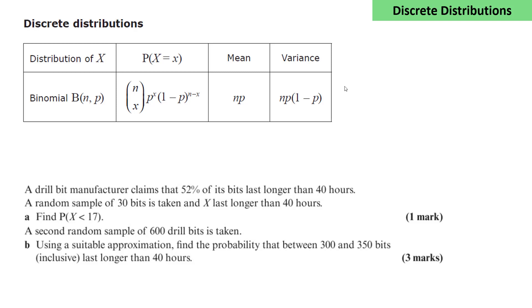Let's look at an example. A drill bit manufacturer claims that 52% of its bits last longer than 40 hours. A random sample of 30 bits is taken and x is the number that last longer than 40 hours. This means that x will follow a binomial distribution with 30 trials and probability of success 0.52.